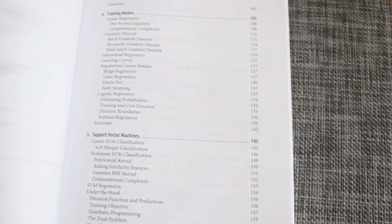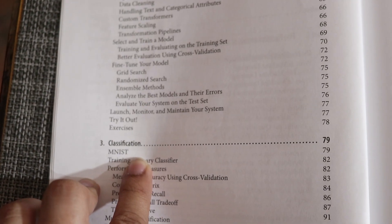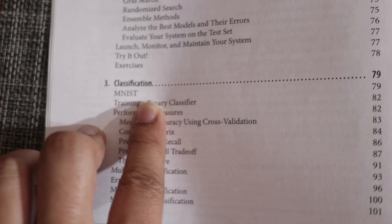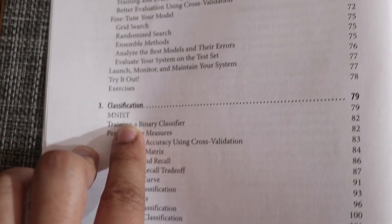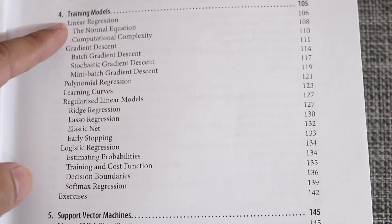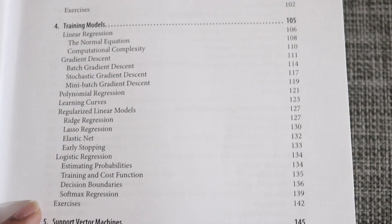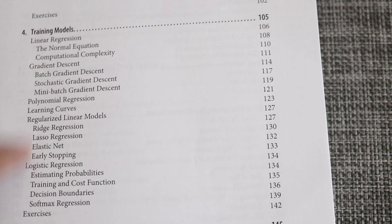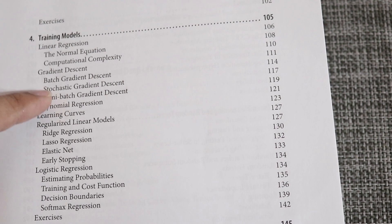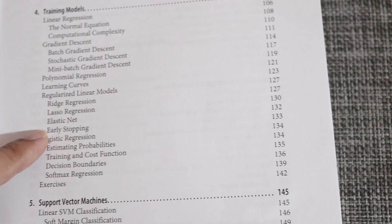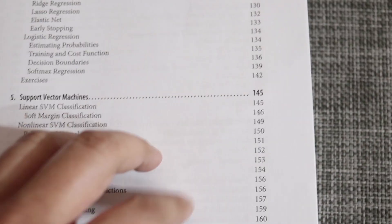Going back to the table of contents, they have classification, and the best part is they use a project-based approach — this time teaching classification using the MNIST dataset, which is really nice. In the training model section they cover linear regression, gradient descent, polynomial regression, learning curves, regularized linear models, and a lot more. Other books just cover basic regressions, but this one also covers mini-batch, stochastic gradient descent, Lasso, and Elastic Net. They also have support vector machines, ensemble methods, and dimensionality reduction.